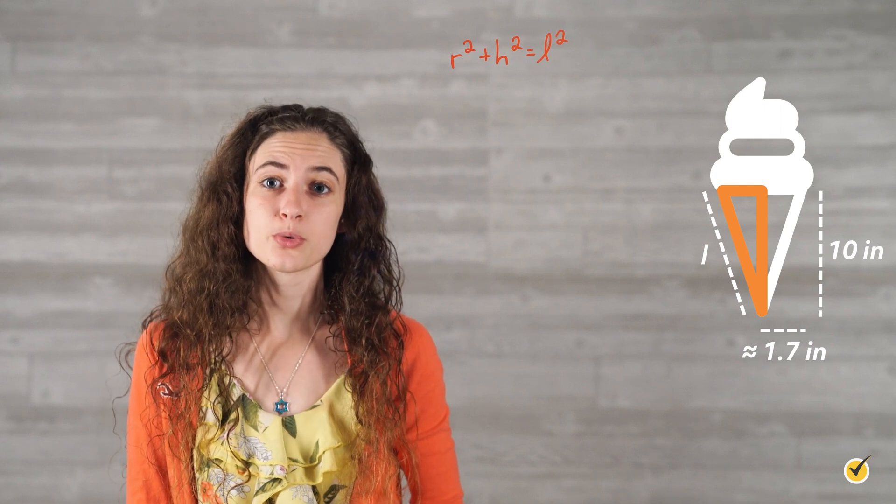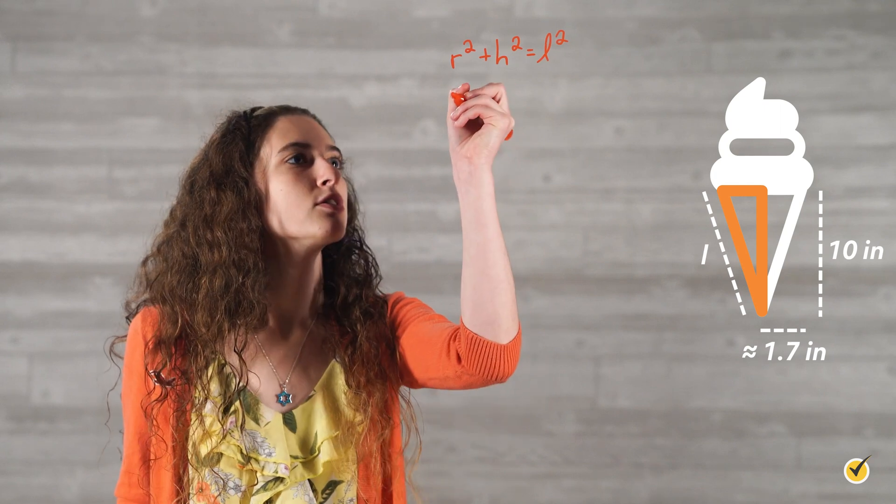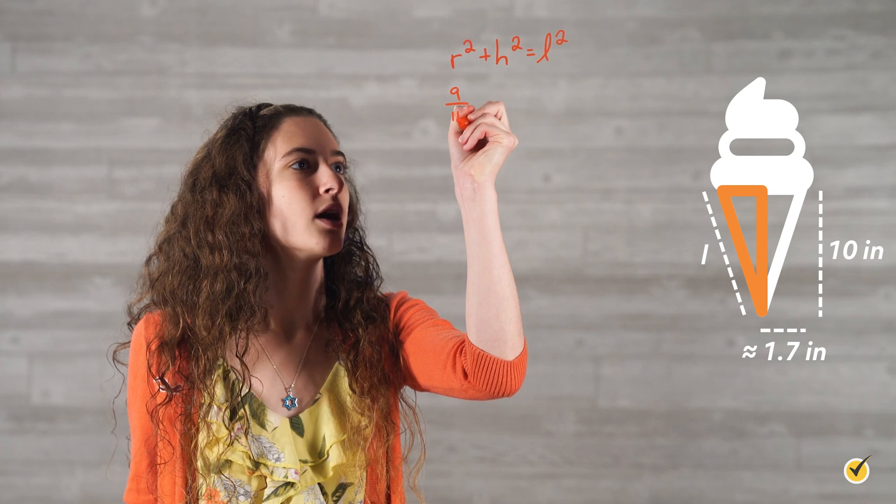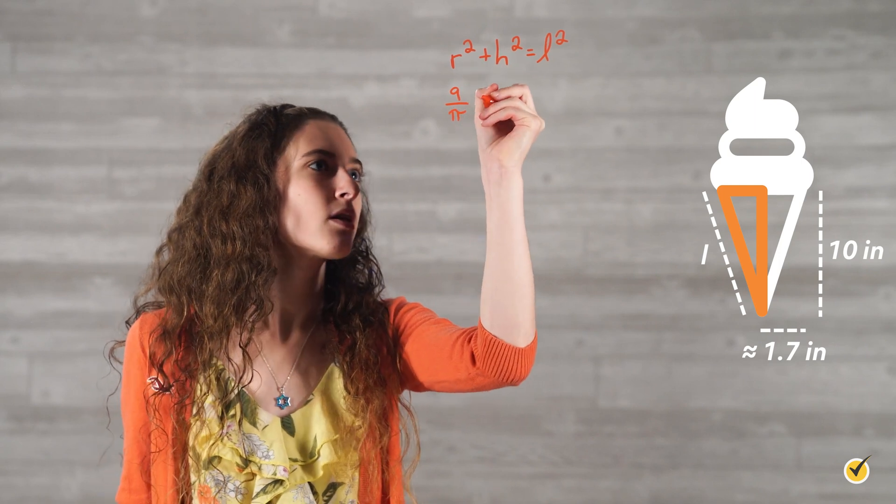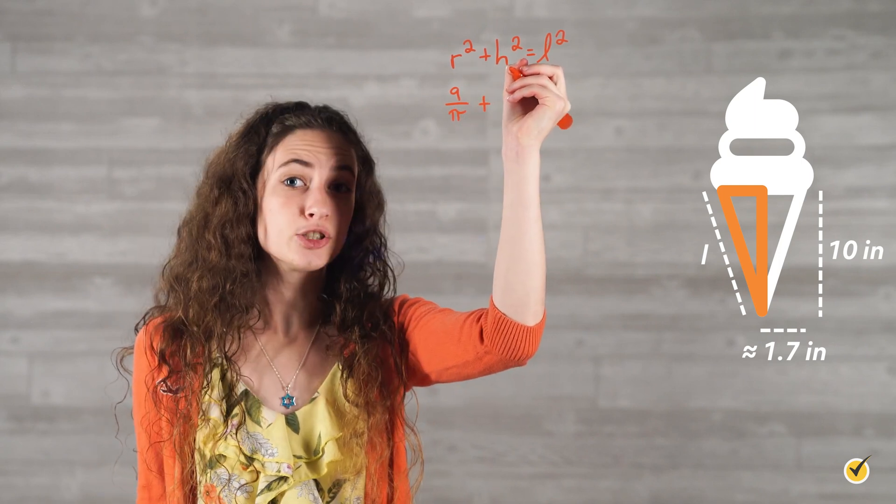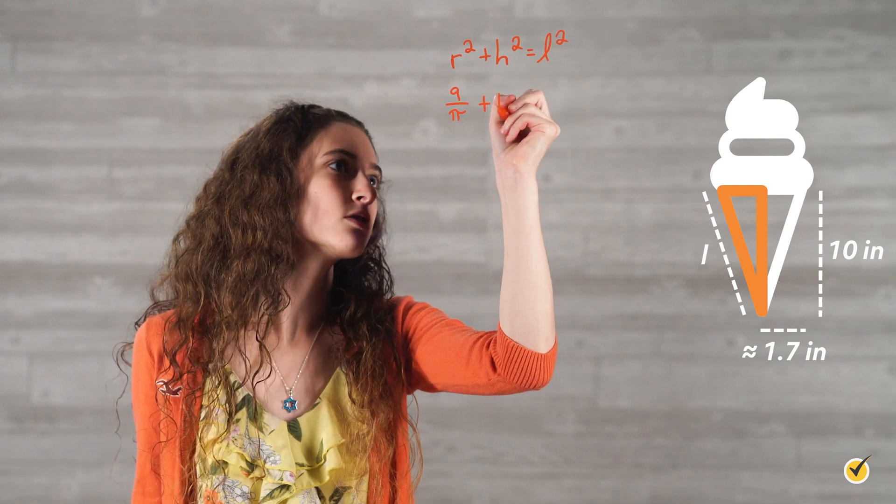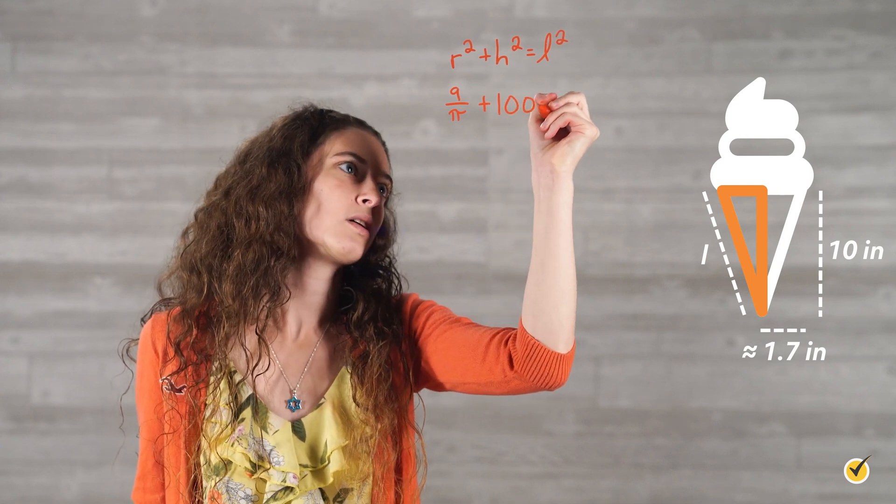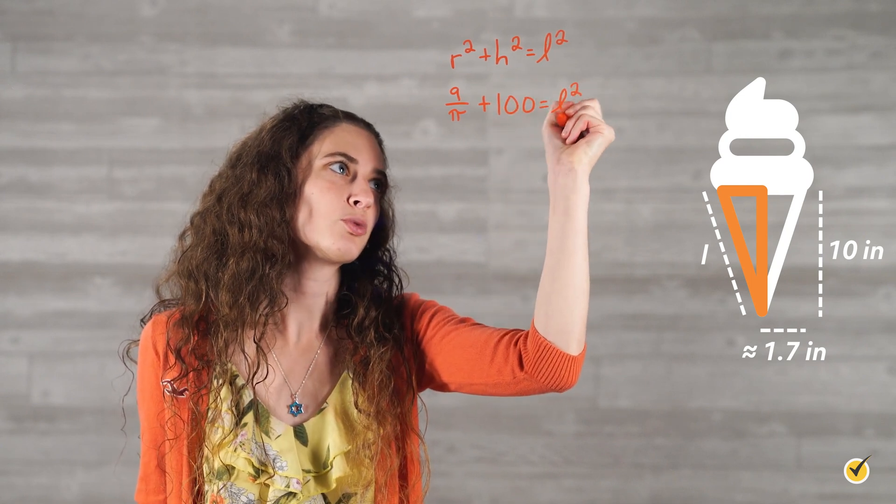Remember, we just saw that r squared equals 9 over pi. So, we can substitute 9 over pi in for r squared plus h squared. H is 10, 10 squared is 100, so plus 100 equals l squared, which we're looking for.